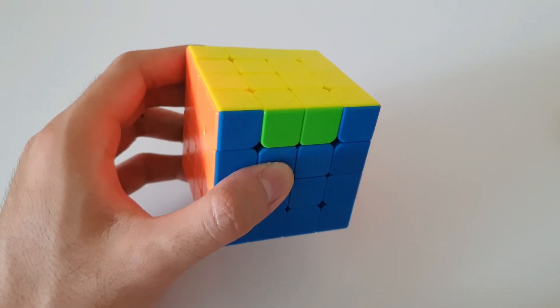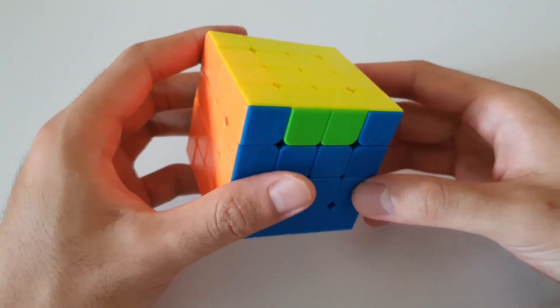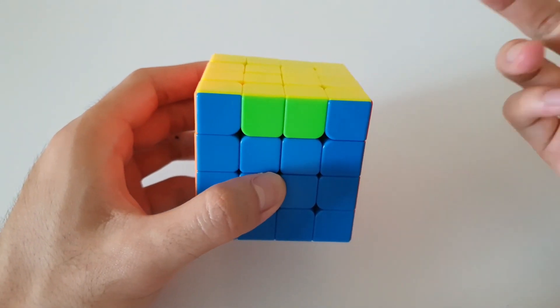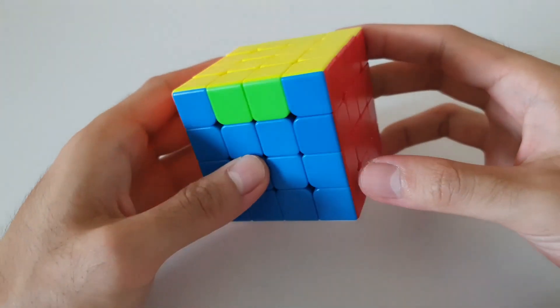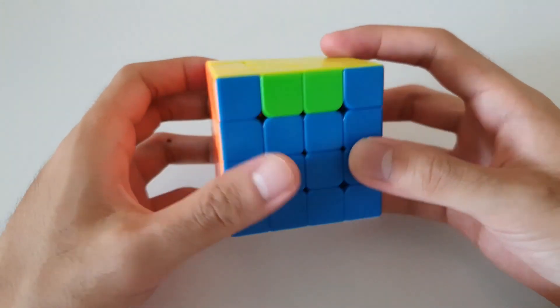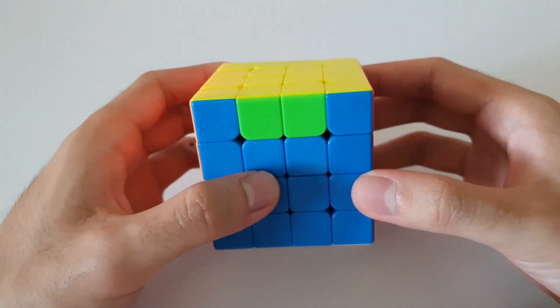But we're not done yet because as I mentioned before, there's also PLL parity, which is pretty much a PLL that you can't get on a 3x3. So in this case, we only have two opposite edges swapped. We can never get such a thing on a 3x3, but we can get such cases on a 4x4.